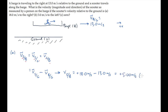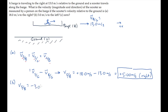The positive sign tells you that the velocity is directed to the right. In part B, the scooter is moving 3 meters per second to the left relative to the ground, so we get minus 3 meters per second, and subtract the 13 meters per second to find the velocity of the scooter relative to the barge is minus 16 meters per second — meaning it's moving at 16 meters per second to the left relative to the barge.